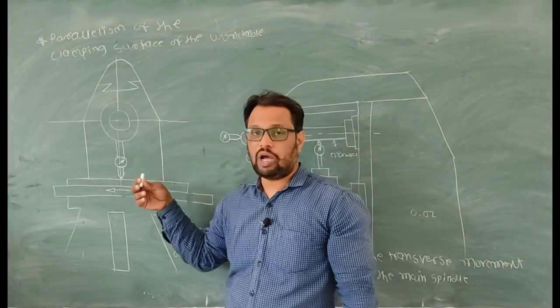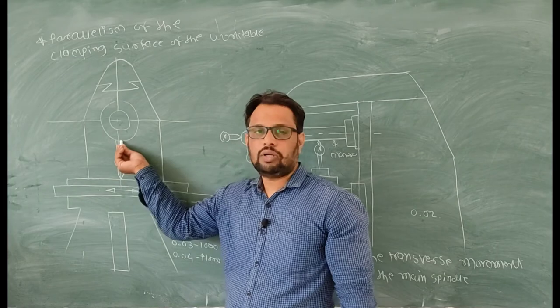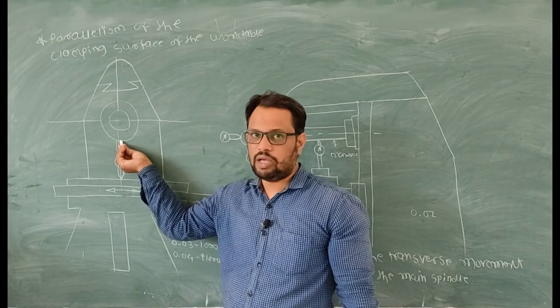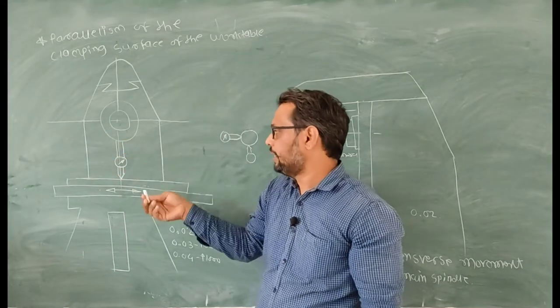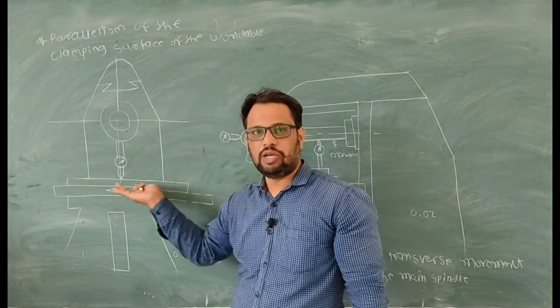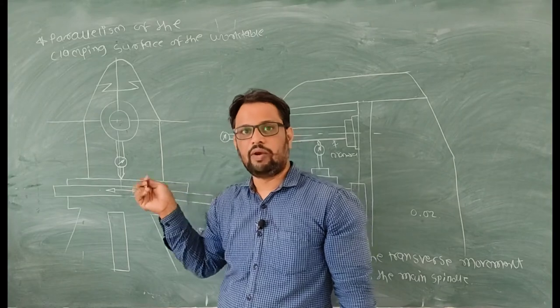So first of all, what I will do is clamp the V block on arbor, touch the dial indicator to the clamping surface of your milling machine, and then move the table in longitudinal direction and note the variation.